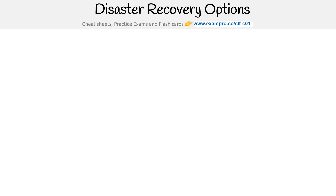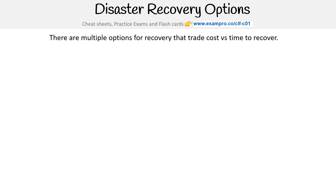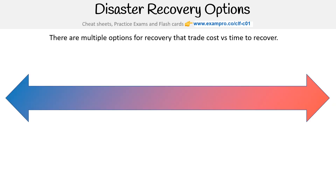Let's take a look at our disaster recovery options. Based on what you choose, there's going to be a trade-off of costs versus time to recover, based on the RPOs and RTOs. Sometimes this is represented vertically, like a thermostat, or you can do it horizontally. Both are valid ways of displaying this information, but I just have it horizontally here today.